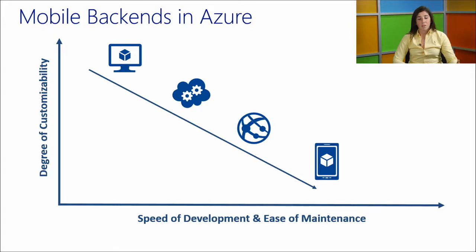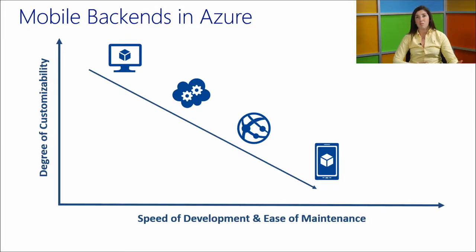As you move to the right of the spectrum, you give up some control but get quicker development time. With web and worker roles, Microsoft patches the OS for you. With websites, you get an environment tailored for your application type. With mobile services, you get helpers specific to mobile: authentication, push notifications, storage, and logic.